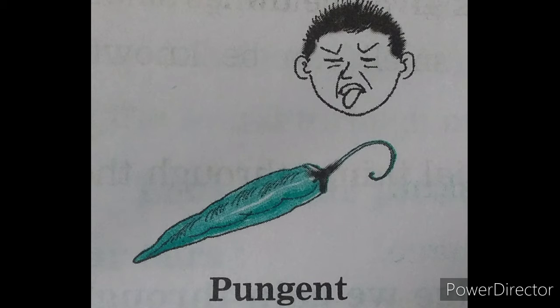Next one: pungent taste. P-U-N-G-E-N-T. We can say tikut in Marathi. Chilli is an example of pungent taste. Children, if you eat chilli, then the taste will be pungent.